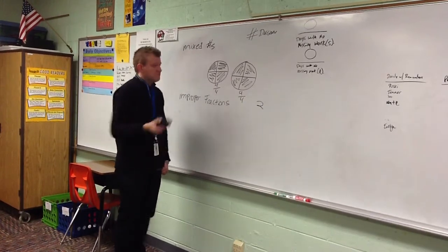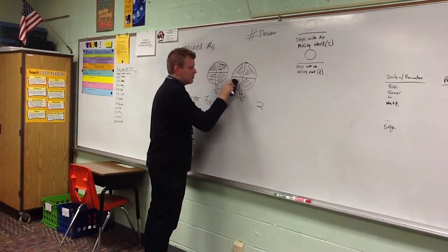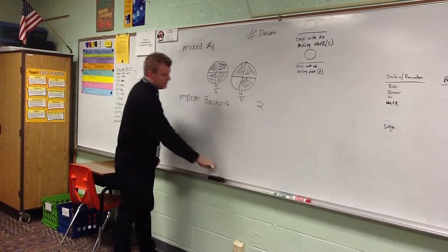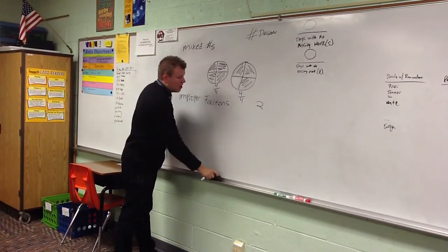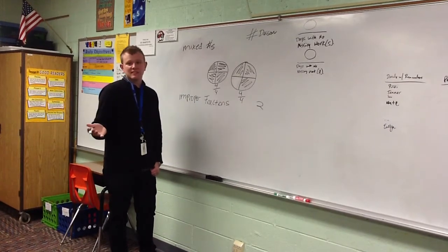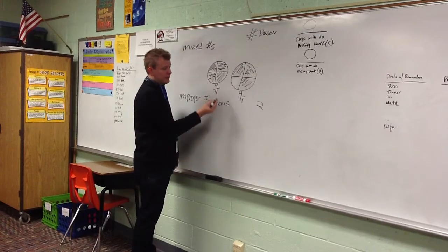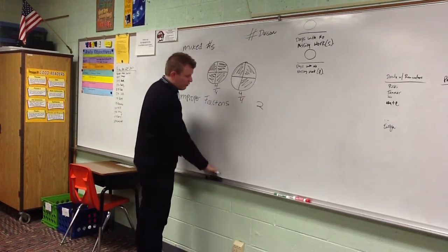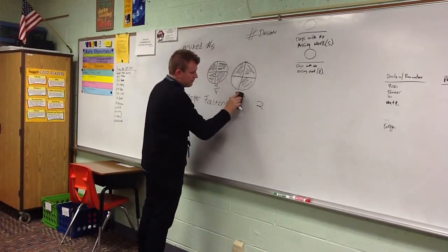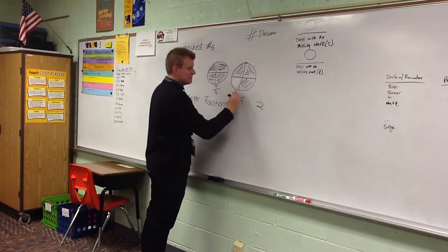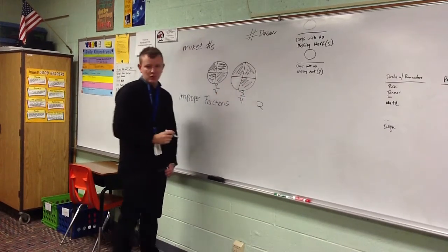But, as we all know with pizza, it doesn't last very long. So I'm going to eat a piece. I ate one piece, one slice that is now gone. I don't have two pizzas anymore, do I? I don't have two whole pizzas anyway. I have four fourths over here, but what do I have over here? It's not four fourths anymore. Now I have one slice, two slice, three slices out of four slices total.